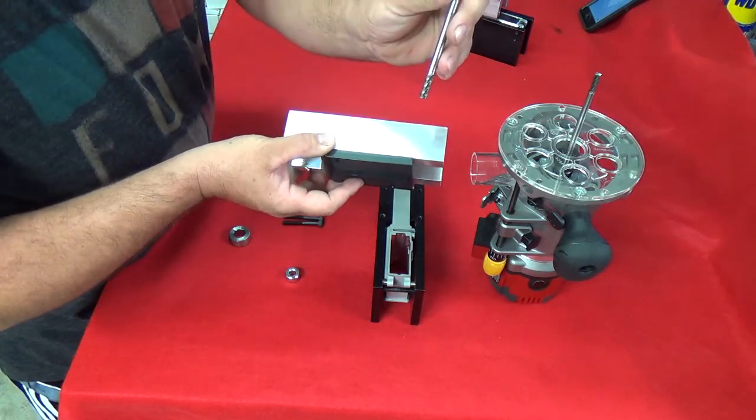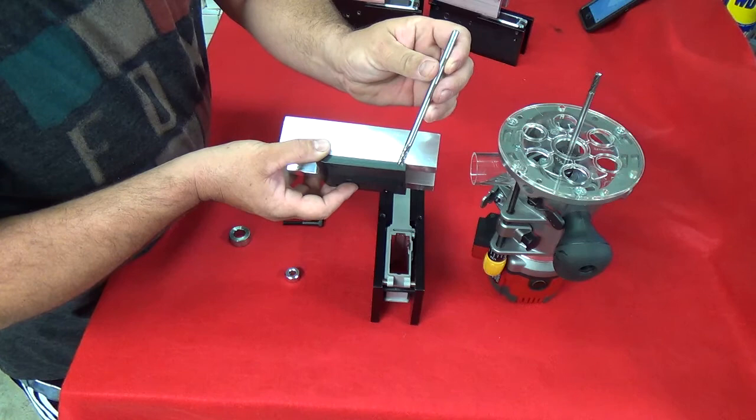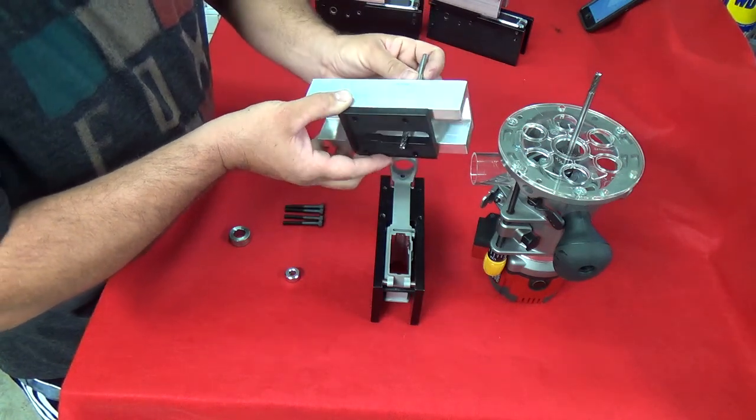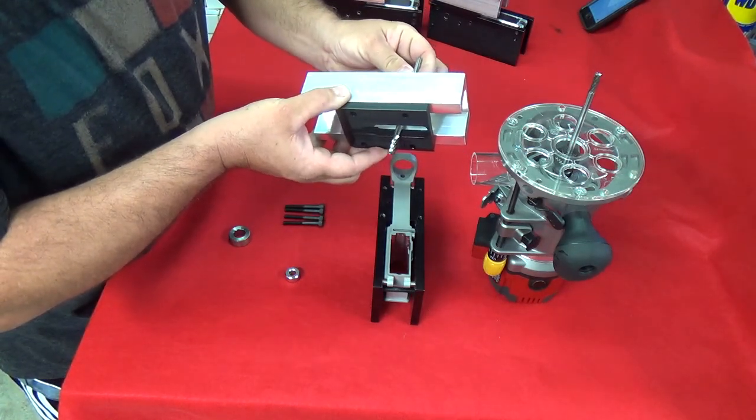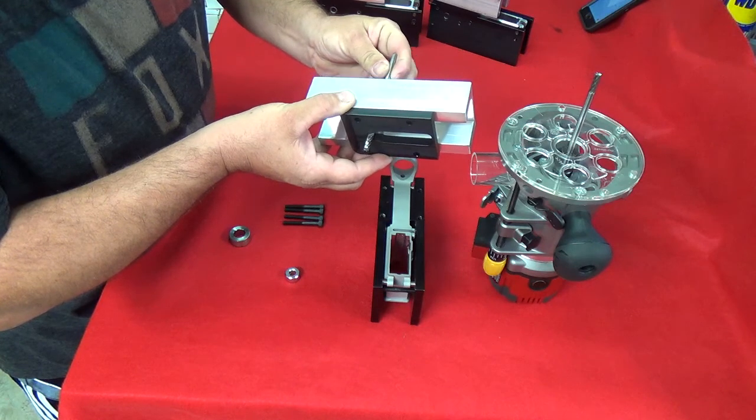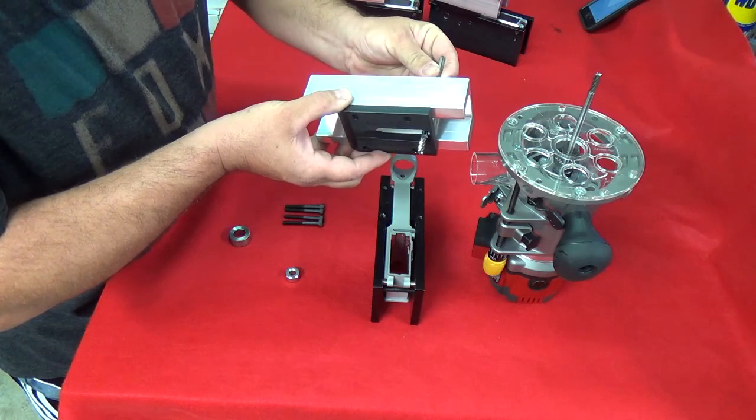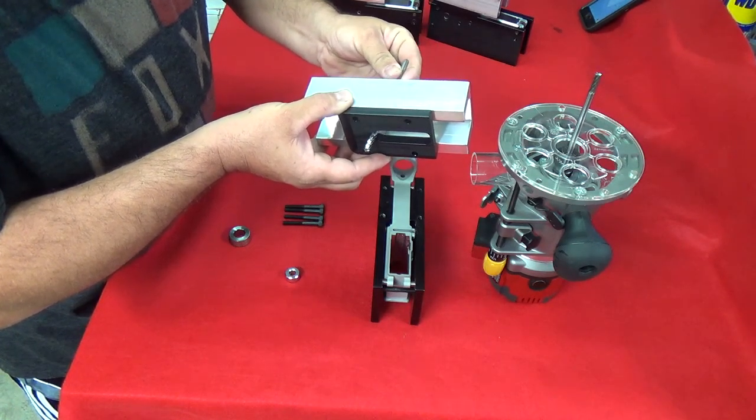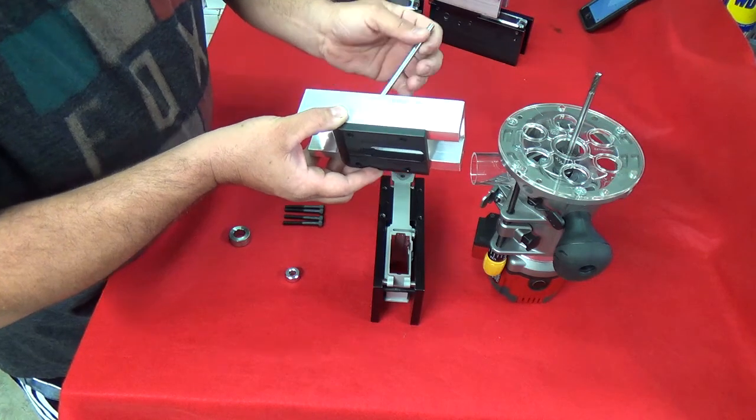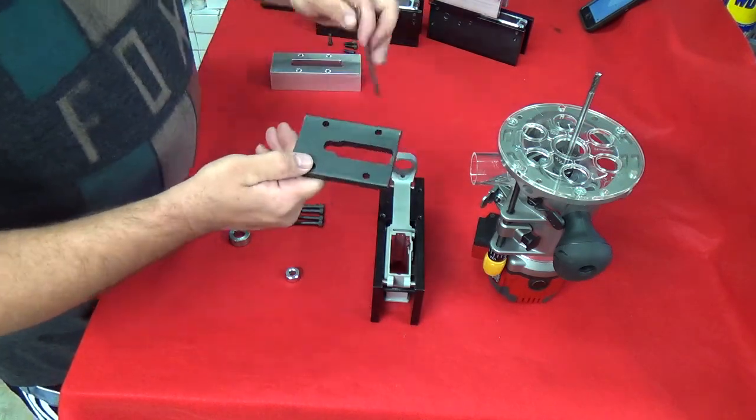your shank from your proprietary end mill is going to drop into the holes that you drilled and it's going to guide off of your template. Okay which is this right here.